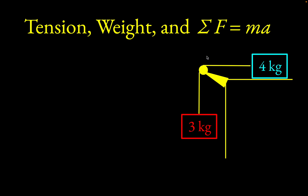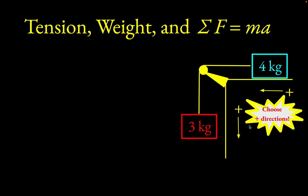The idea here is you have two blocks connected by a string and we're going to figure out the rate at which the system accelerates. The first thing you want to do is choose positive directions for the system. Clearly this object is going to get pulled downward by gravity, so the three kilogram block moves downward and the four kilogram block moves to the left. I've chosen these as my positive directions. Whatever value of acceleration you get for the three kilogram object downward, that same numerical magnitude will be the same value you'll get for the four kilogram mass moving to the left.